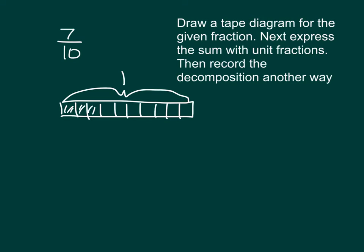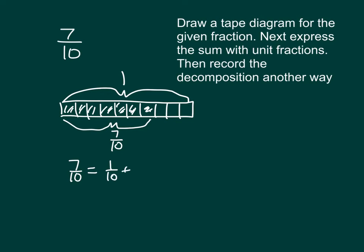That's why we'll shade it in — one, two, three, four, five, six, seven — and then we'll make sure to label it as well. Seven-tenths does equal what as a sum of unit fractions? So seven-tenths — how many tenths do we have to add together? Seven of them.